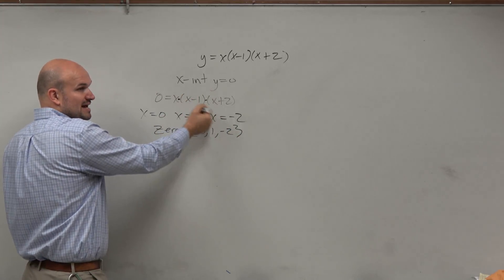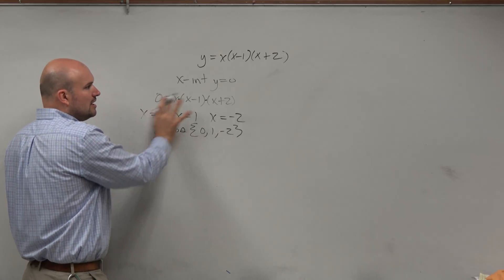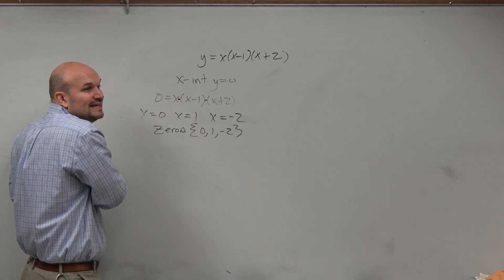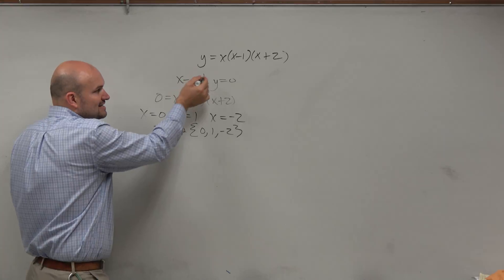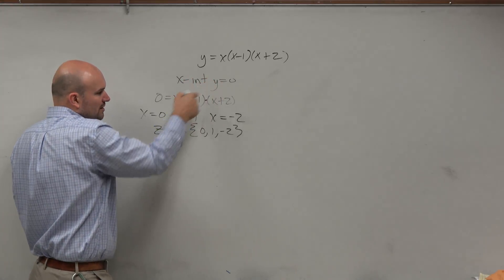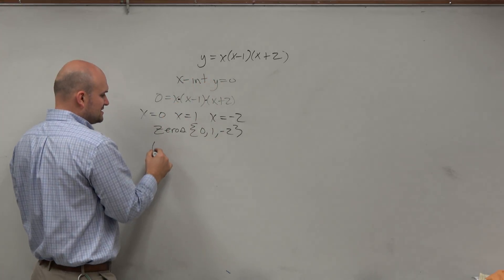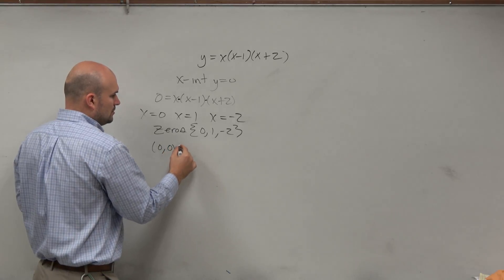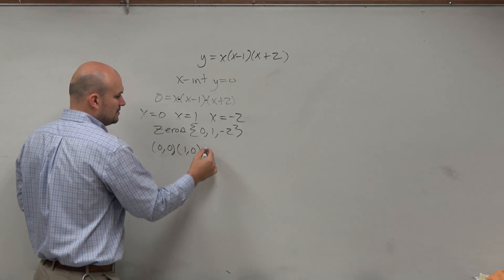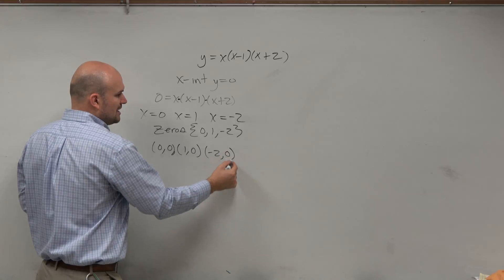So the zeros are the values that make your function equal to 0. But again, I'm asking for what are the intercepts. So again, the x-intercept is when y is equal to 0. So the x-values are all of these: (0, 0), (1, 0), and (-2, 0).